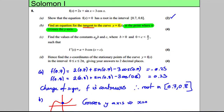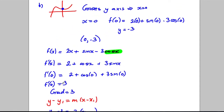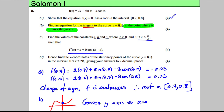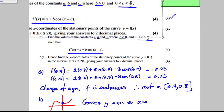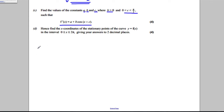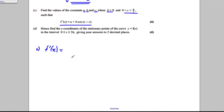Now for the next part: find values a, b, and c where b > 0 and c is between 0 and π/2, such that f'(x) equals a given form. We already worked out f'(x) = 2 + cos x + 3sin x. We want to write it as a number plus b·cos(x - c), so the 2 stays, and we need to rewrite cos x + 3sin x in that form.